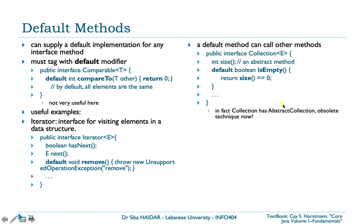Before Java 8, the pattern was: provide an interface, then an abstract class that implements all the abstract methods of the interface while leaving specific methods for concrete classes, so that concrete classes extend the abstract class rather than implementing the interface directly. This entire logic is now obsolete, because you can simply provide a default method for the interface — no need for abstract classes anymore.